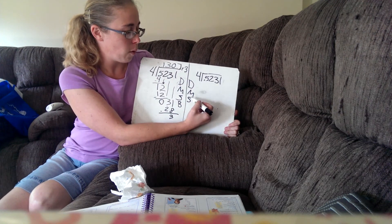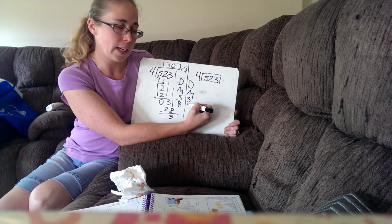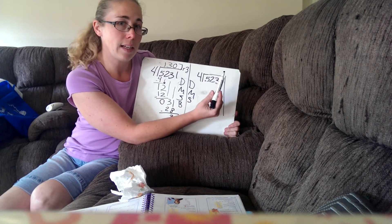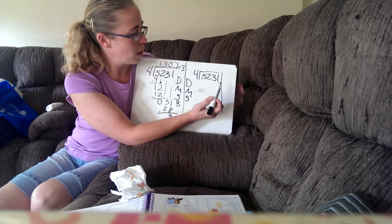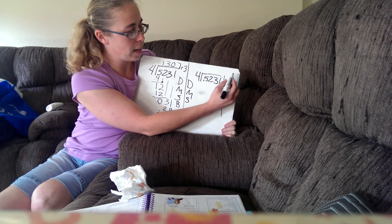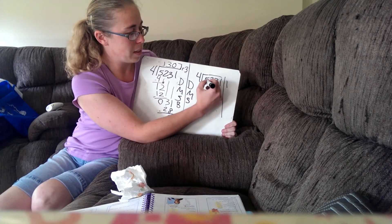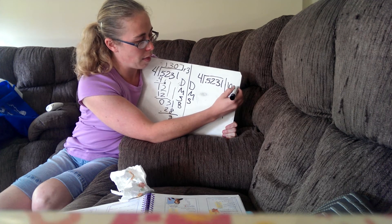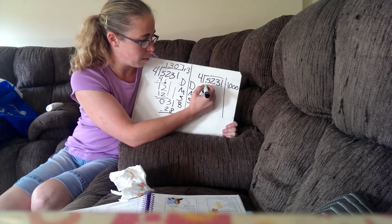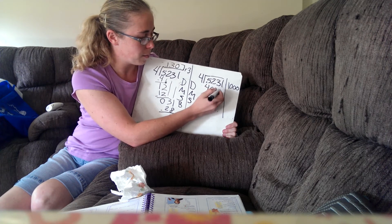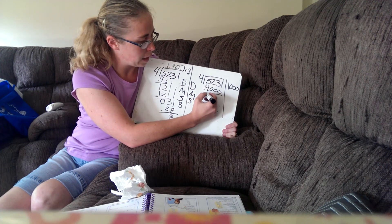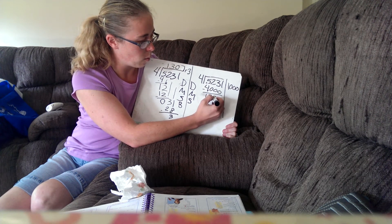Now, doing it the other way — where we don't have to do the bring-down step — we're going to work in the thousands place, then the hundreds place, then the tens place, and then the ones place. In the thousands place, can four divide five? Sure it can — it can divide it one time. But since we're in the thousands place, it's not one, it's one thousand. Now we multiply: one thousand times four equals four thousand. And now we subtract. That leaves us with one thousand two hundred and thirty-one.